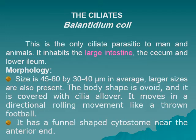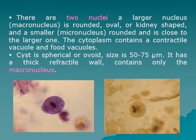Ciliate protozoa as intestinal parasites: Balantidium coli is the only ciliate parasite of humans and animals. It inhabits the large intestine, cecum, and lower ileum. It is a large protozoan, about 60 by 40 micrometers on average, with larger sizes also present. The body is ovoid and covered with cilia all over. It moves in a directional rolling movement like a thrown football, with a funnel-shaped cytostome near the anterior end.